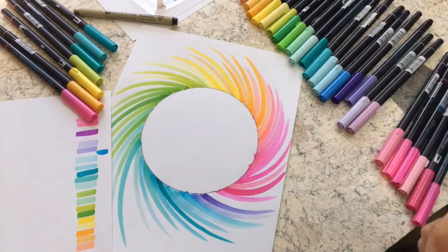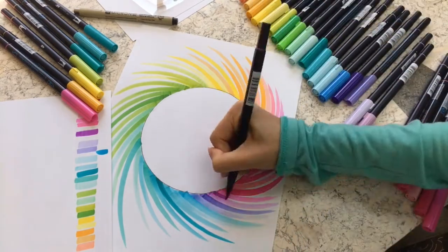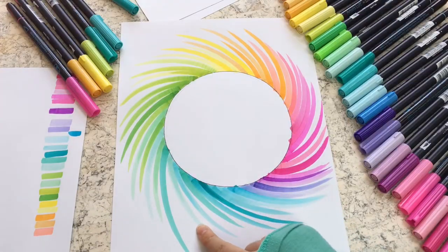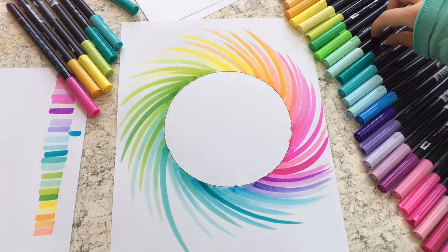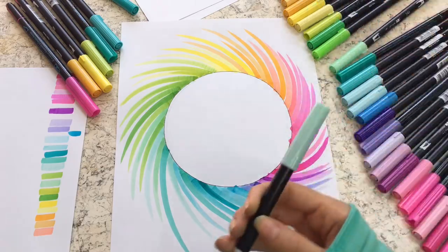Once you've finished going around the entire circle you can check to see if there are any changes you'd like to make. For example I'm choosing to fill in this large gap here with a brush pen of a similar color.